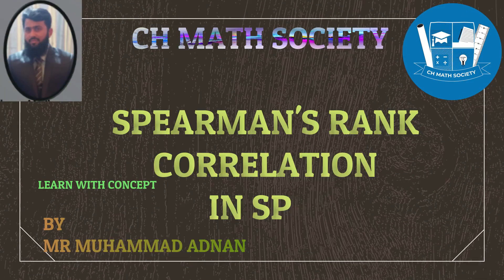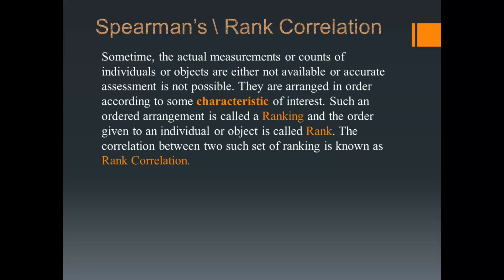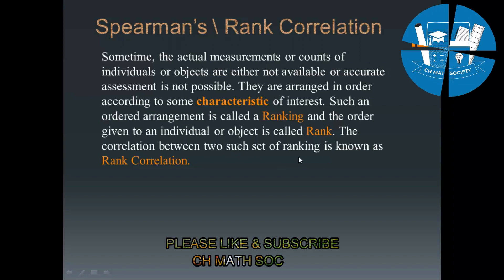Assalamualaikum friends, today's topic is Spearman's Rank Correlation. Sometimes the actual measurement or count of individuals or objects are either not available or accurate assessment is not possible. They are arranged in order according to some characteristics of interest. Such an arrangement is called a ranking and the order given to an individual or object is called rank. The correlation between two such sets of rankings is known as rank correlation.